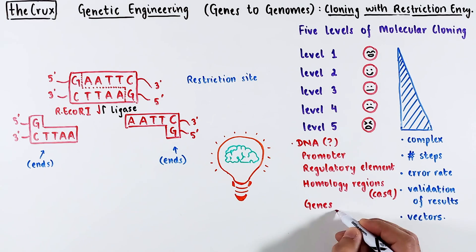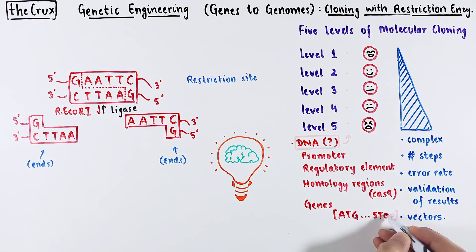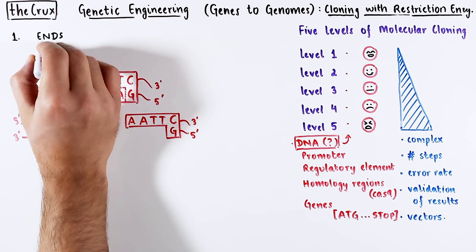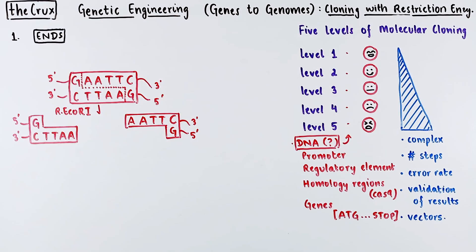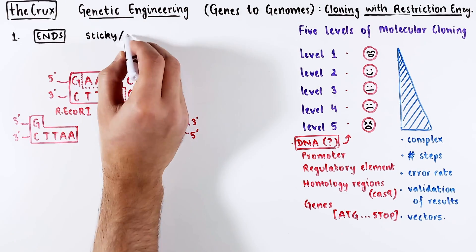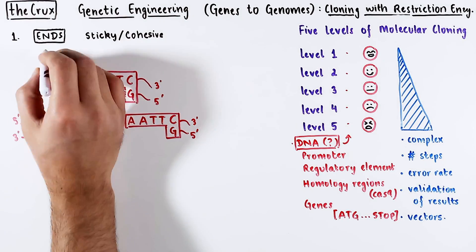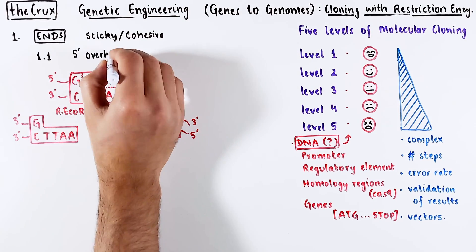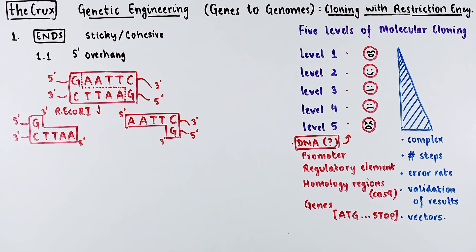This video is intended to make molecular cloning intuitive, and you can use it to clone any DNA like promoters, regulatory elements, homology regions for CRISPR-Cas9, molecular probes, or even genes. In molecular cloning, you will have to deal with ends. One type is called sticky or cohesive ends.